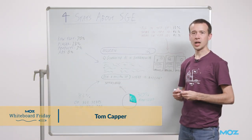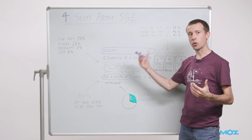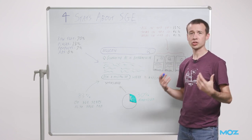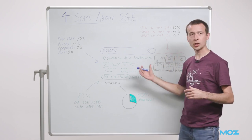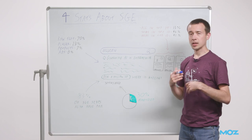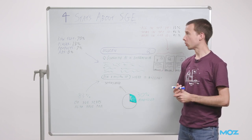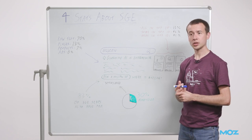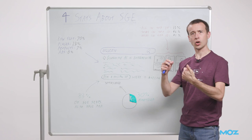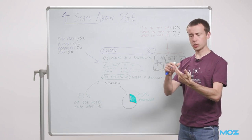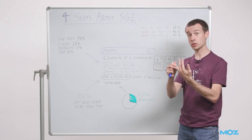Happy Friday, Moz fans. I'm here today to share four quick stats about Google's Search Generative Experience. In case you haven't heard of this before, it's a new kind of search result, a new SERP feature that Google started testing earlier this year. Currently, this isn't generally rolled out. You can only see it if you're opted into Google Labs, logged in, using Chrome, and have a US IP address, although VPNs do work.